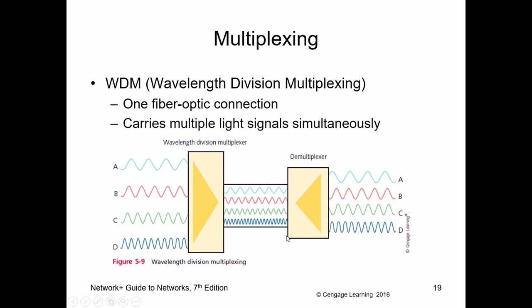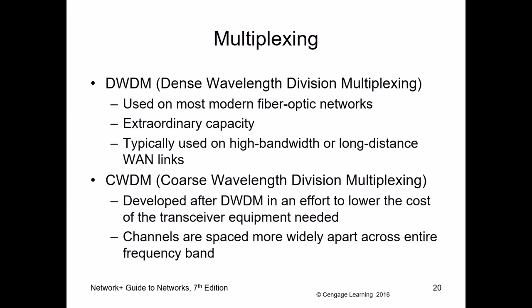When FDM is used on fiber optic cable, it's called Wavelength Division Multiplexing (WDM) — you mix different light wavelengths on the same fiber and demultiplex them on the other end. Dense Wavelength Division Multiplexing (DWDM) packs many frequencies together in fiber optic networks. Coarse Wavelength Division Multiplexing (CWDM) spaces channels more widely apart across the frequency band. These technologies enable 10 gigabit and 40 gigabit bandwidths.